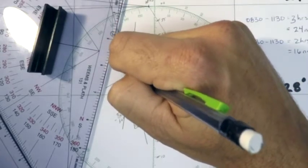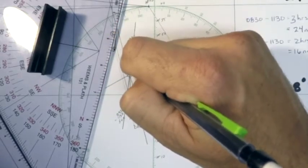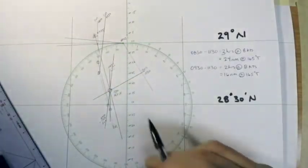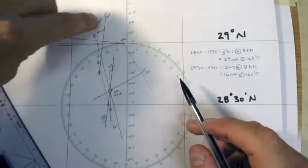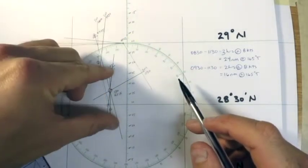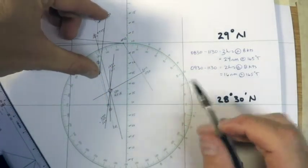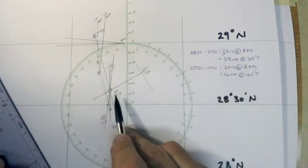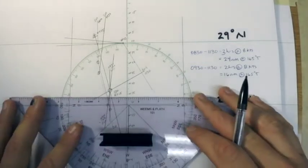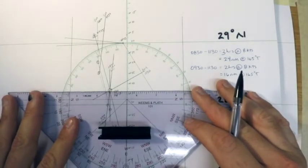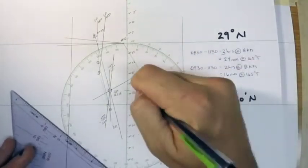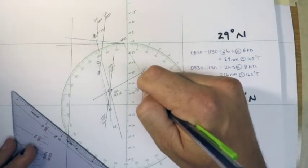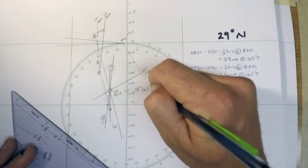This would be my 1130 running fix. I have my 1130 sun line, I have my 830 sun line that I brought down three hours, I have my 930 sun line that I brought down two hours, and where they all meet is the fix. Based on that I can get my latitude and longitude from it. The latitude is 28 degrees and it looks like about 36.5 minutes north, and longitude 71 degrees 09.0 minutes west.